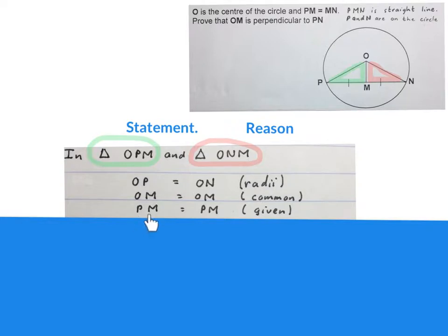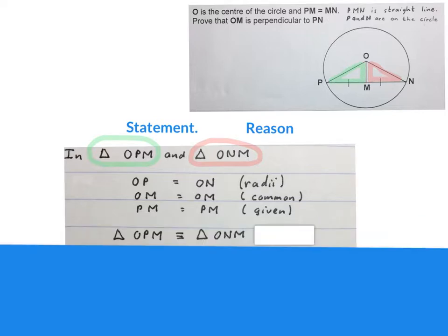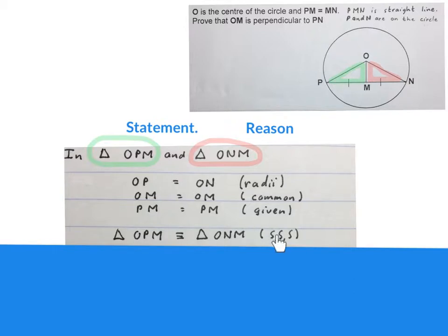Then you can say PM is equal to MN, given — they told us that it was equal. Then we can write triangle OPM, the green one, is congruent to triangle ONM, the red one. Our case of congruency is side-side-side.